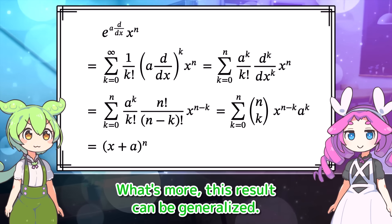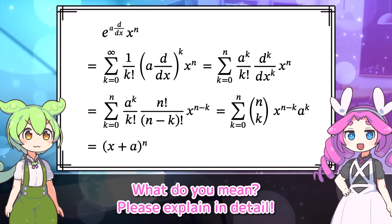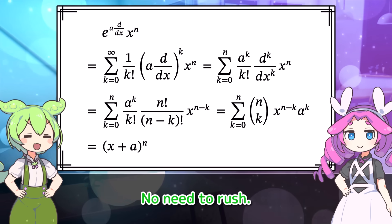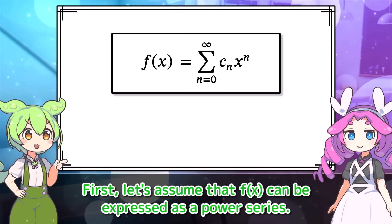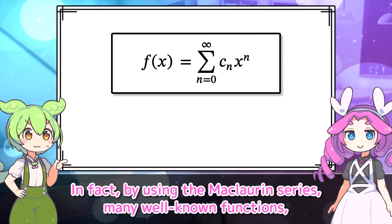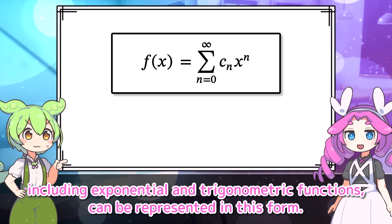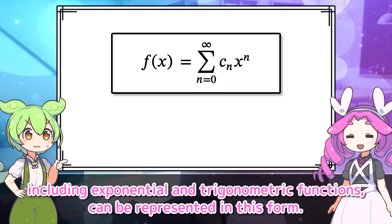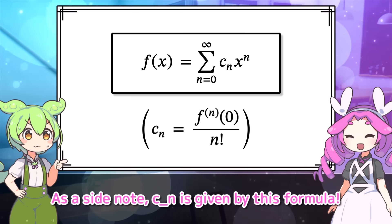What's more, this result can be generalized. Please explain in detail. First, let's assume that F of X can be expressed as a power series. In fact, by using the Maclaurin series, many well-known functions — including exponential and trigonometric functions — can be represented in this form. As a side note, C sub N is given by this formula.